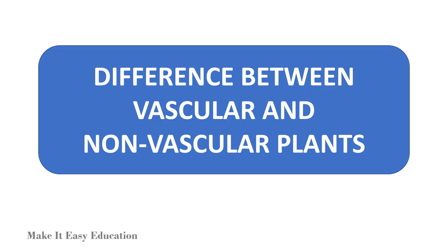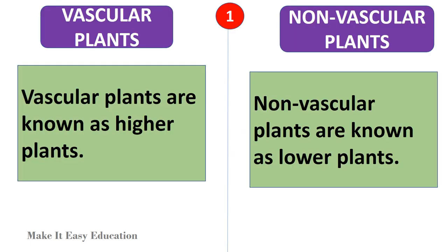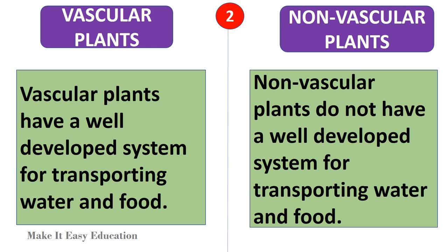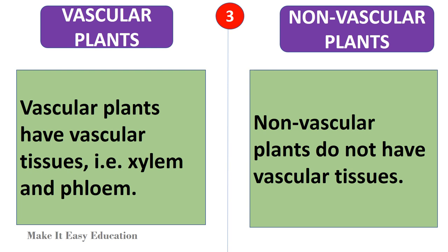Difference between vascular and non-vascular plants: Vascular plants are known as higher plants, while non-vascular plants are known as lower plants. Vascular plants have a well-developed system for transporting water and food; non-vascular plants do not. Vascular plants have vascular tissues, that is, xylem and phloem; non-vascular plants do not have vascular tissues.